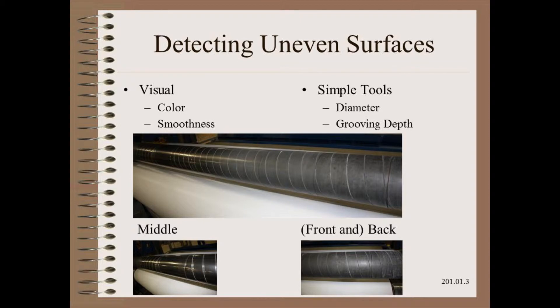The simplest way to detect an uneven surface is visually. The roller may have a different color or gloss in one area than another. Sometimes these differences are nearly invisible but might be picked up by running your fingers across the roller. If the problem is wear, we can measure this with any number of tools. The most sensitive would be a profilometer that measures RMS roughness, but this simple tool is not common in most plants.